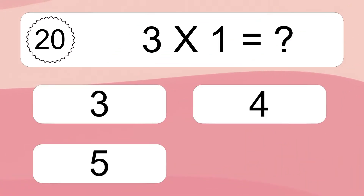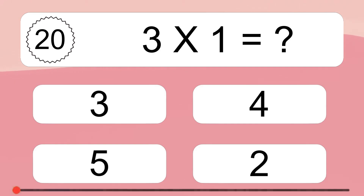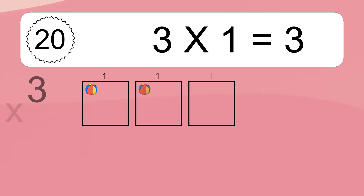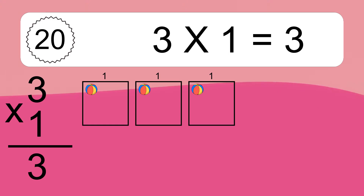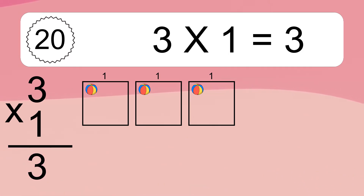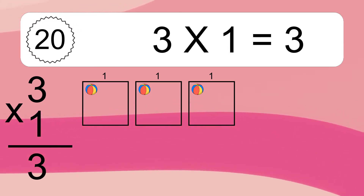Three times one equals what? Three times one equals three. We have three boxes, and each box has one colorful ball inside. If you count all the balls in all the boxes together, you will have three times one balls. This equals three balls.